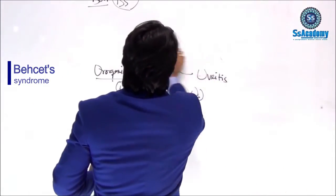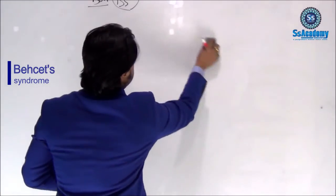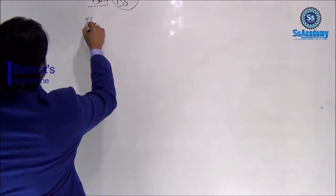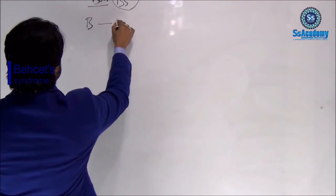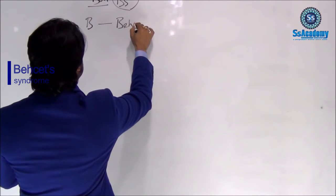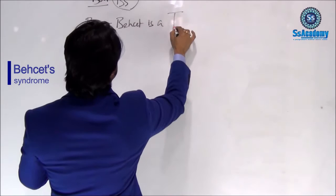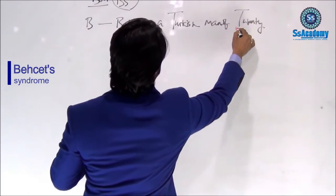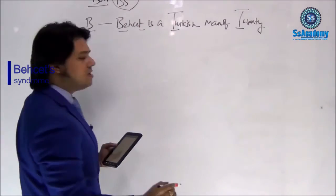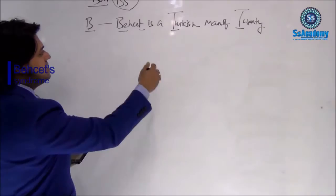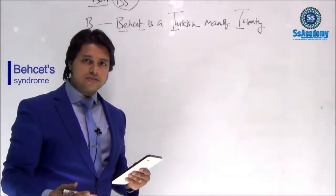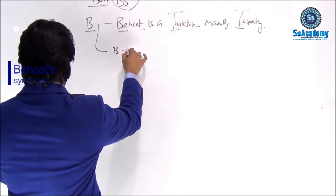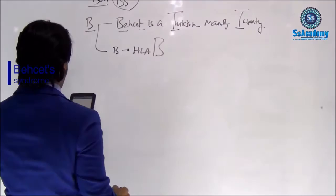Now let's see how we can remember all the features of Behçet's syndrome. The Behçet's syndrome stands for BS. Using the letter B, we can remember the features. So B stands for: 'Behçet is a Turkish man of 20' — that will be helpful to remember the epidemiology.